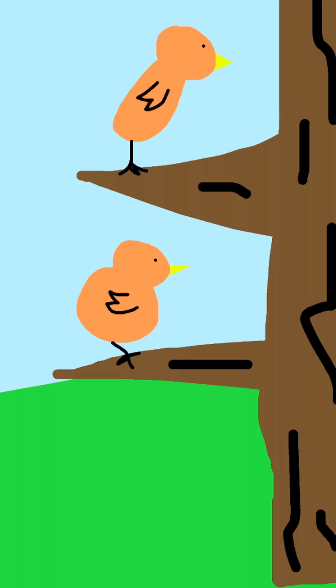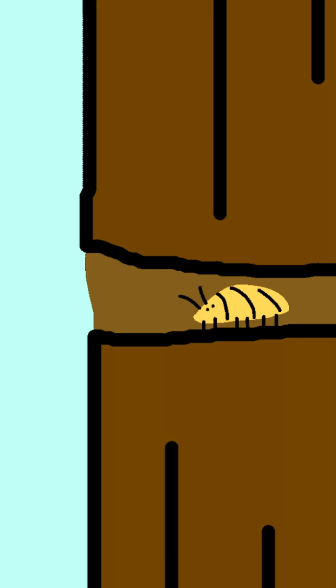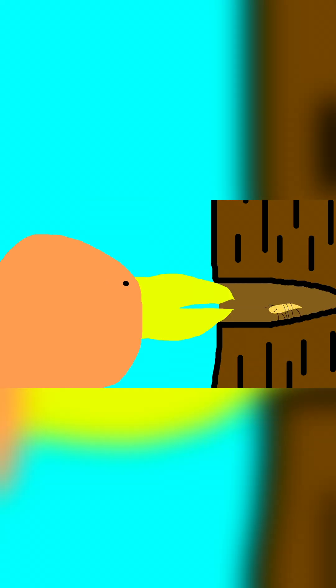So let's say we have a population of birds that have variable beak sizes, and their prey is beetles that live in small holes in the barks of trees. Birds that have beaks that are too small can fit their beaks into the holes, but their beaks don't have the tools necessary to properly break the shell of the beetles that live in there.